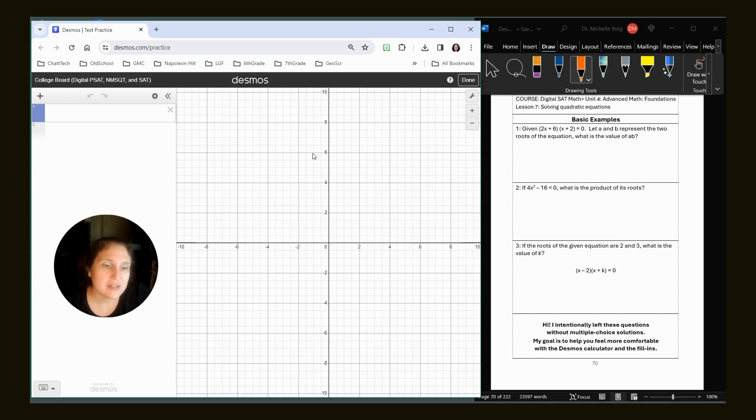Given 2(X+6)(X+2) equals zero. Let A and B represent the two roots of the equation. What is the value of AB? So there's a lot to unpack here, but the first thing we're going to do is type it in the function.